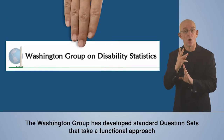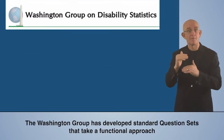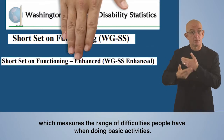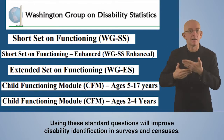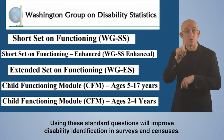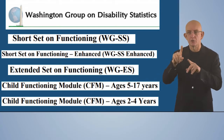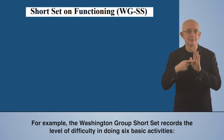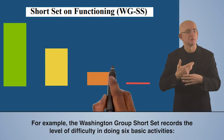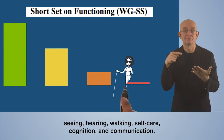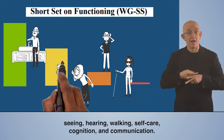The Washington Group has developed standard question sets that take a functional approach which measures the range of difficulties people have when doing basic activities. Using these standard questions will improve disability identification in surveys and censuses. For example, the Washington Group short set records the level of difficulty in doing six basic activities: seeing, hearing, walking, self-care, cognition, and communication.